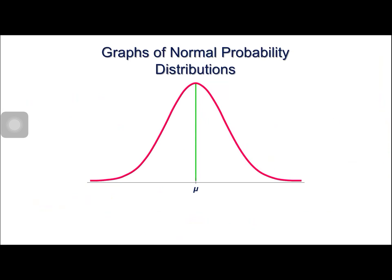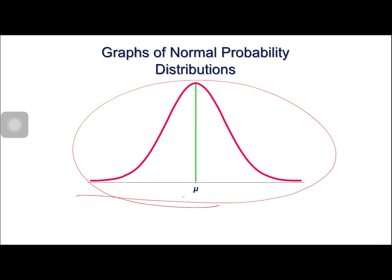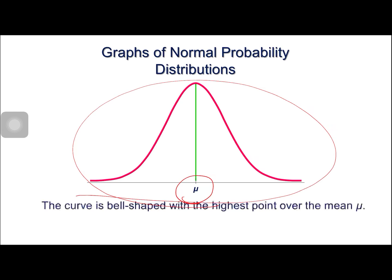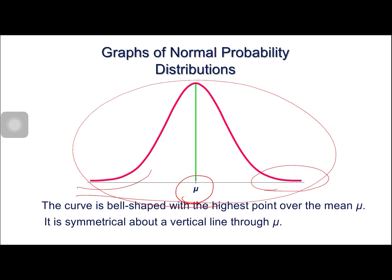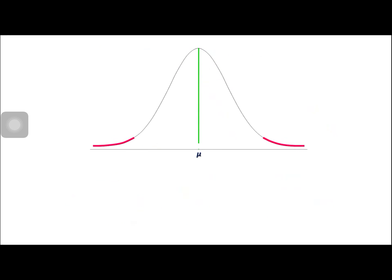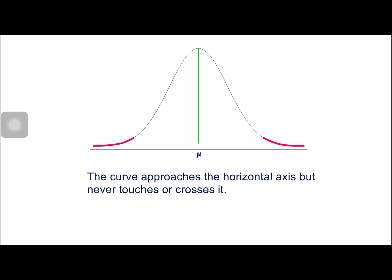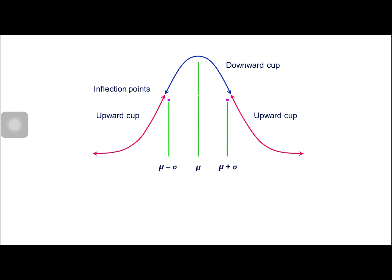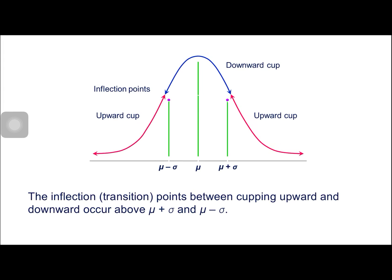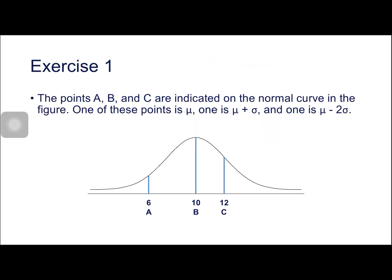For the graphs of normal probability distribution, we have our normal curve where the center is our mean. The curve is bell-shaped with the highest point over the mean mu. It is symmetrical about a vertical line through mu. The curve approaches the horizontal axis but never touches or crosses it. The inflection or transition points between curving upward and downward occur above mu plus sigma and mu minus sigma — that is, one standard deviation from the mean.